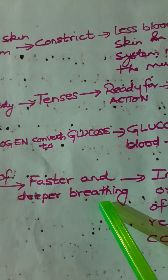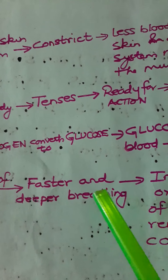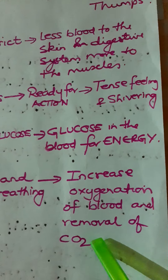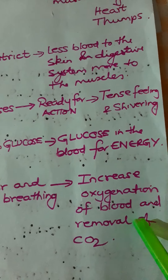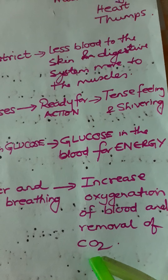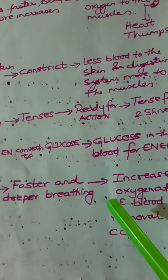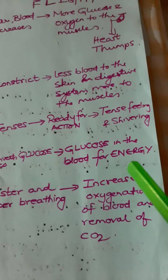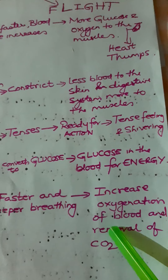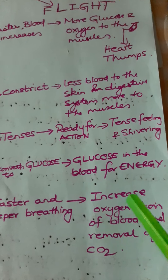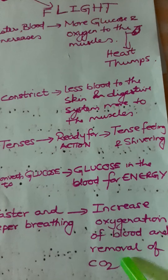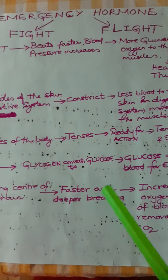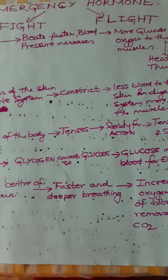The breathing center of the brain triggers faster and deeper breathing. When the person starts breathing faster and deeper, more oxygen enters the system — the blood takes in more oxygen — and there is removal of carbon dioxide. This is what the emergency hormone does.